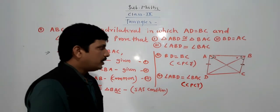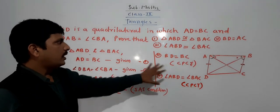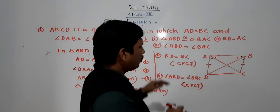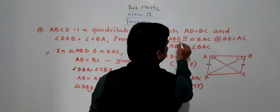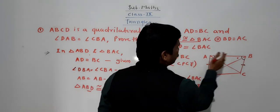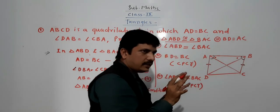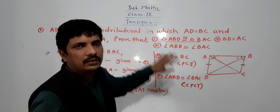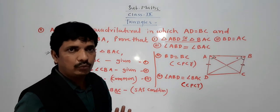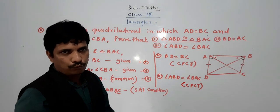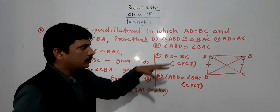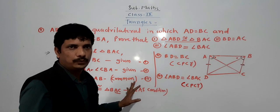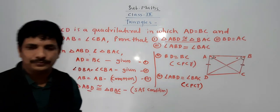So these two results follow from the first proof. One important thing to understand: whatever triangles they are asking about, observe carefully, correlate with the given information, and then get the proof. Observe carefully and solve the same sums again in your notebook. Thank you.